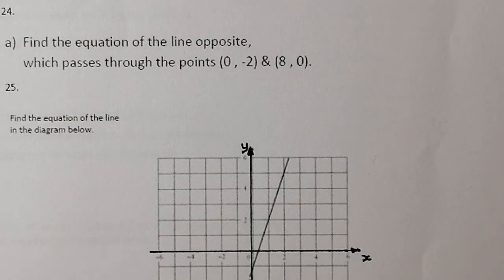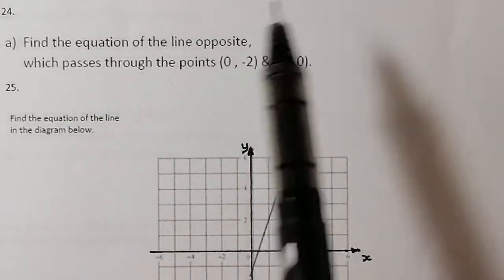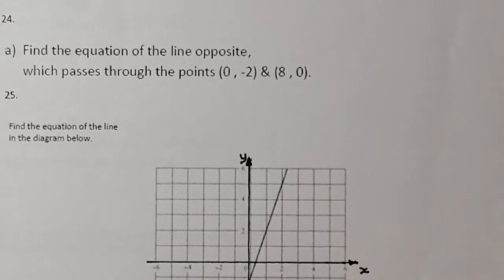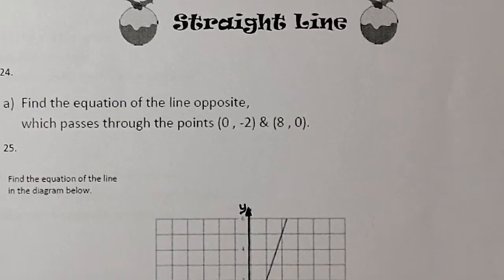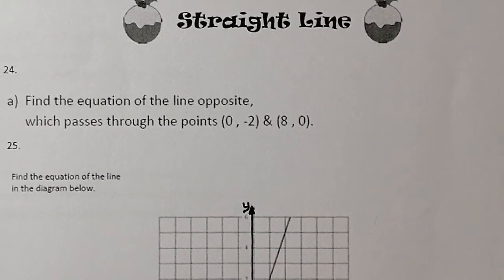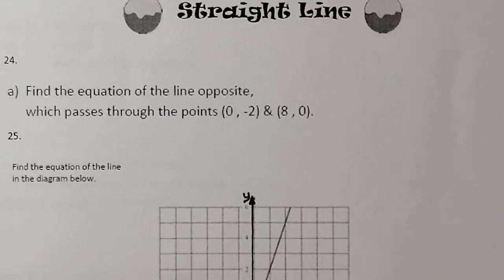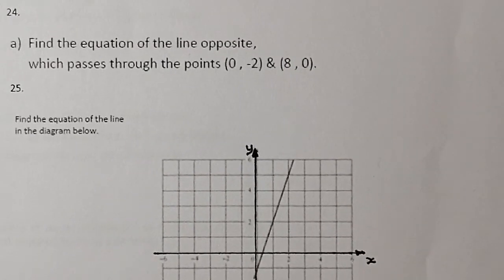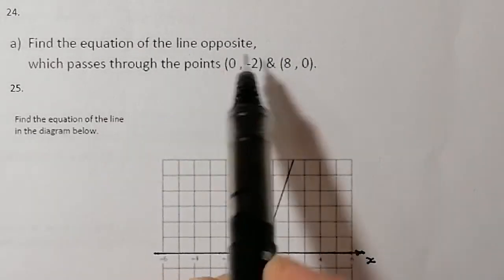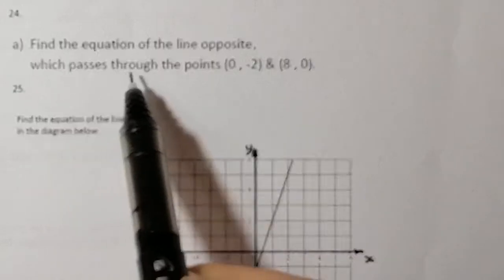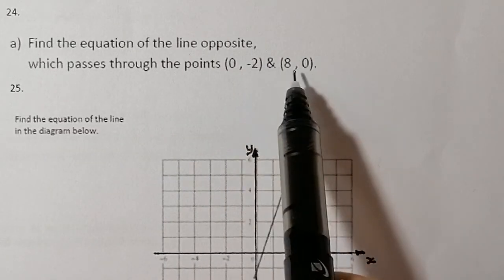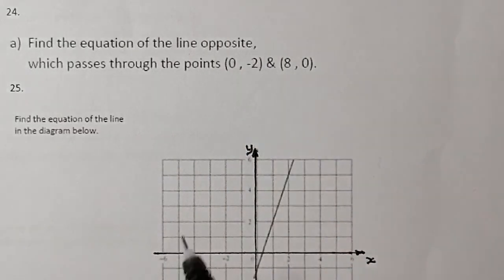This is National 5 Revision. We're looking at the straight line topic today. We've got three questions that we're going to complete. The first one: find the equation of the line which passes through the points (0, -2) and (8, 0).